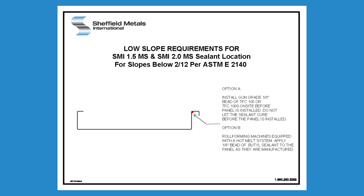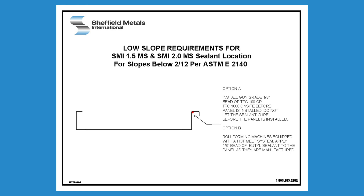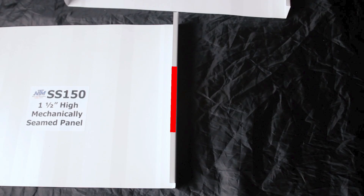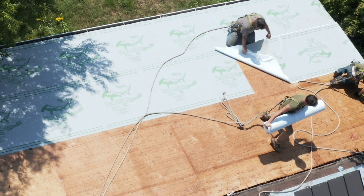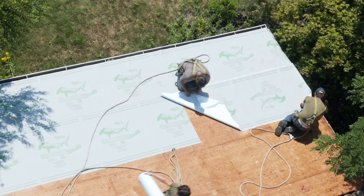If your slope is below a 2/12, we always recommend sealant per ASTM E2140. This means using a 1/8-inch bead of non-curing butyl sealant in the seams. An extra bead is also applied on the male leg of the panel at the clip locations before clips are installed — a process known as wet sealing. Additionally, it's important to use a fully adhered ice and water shield.